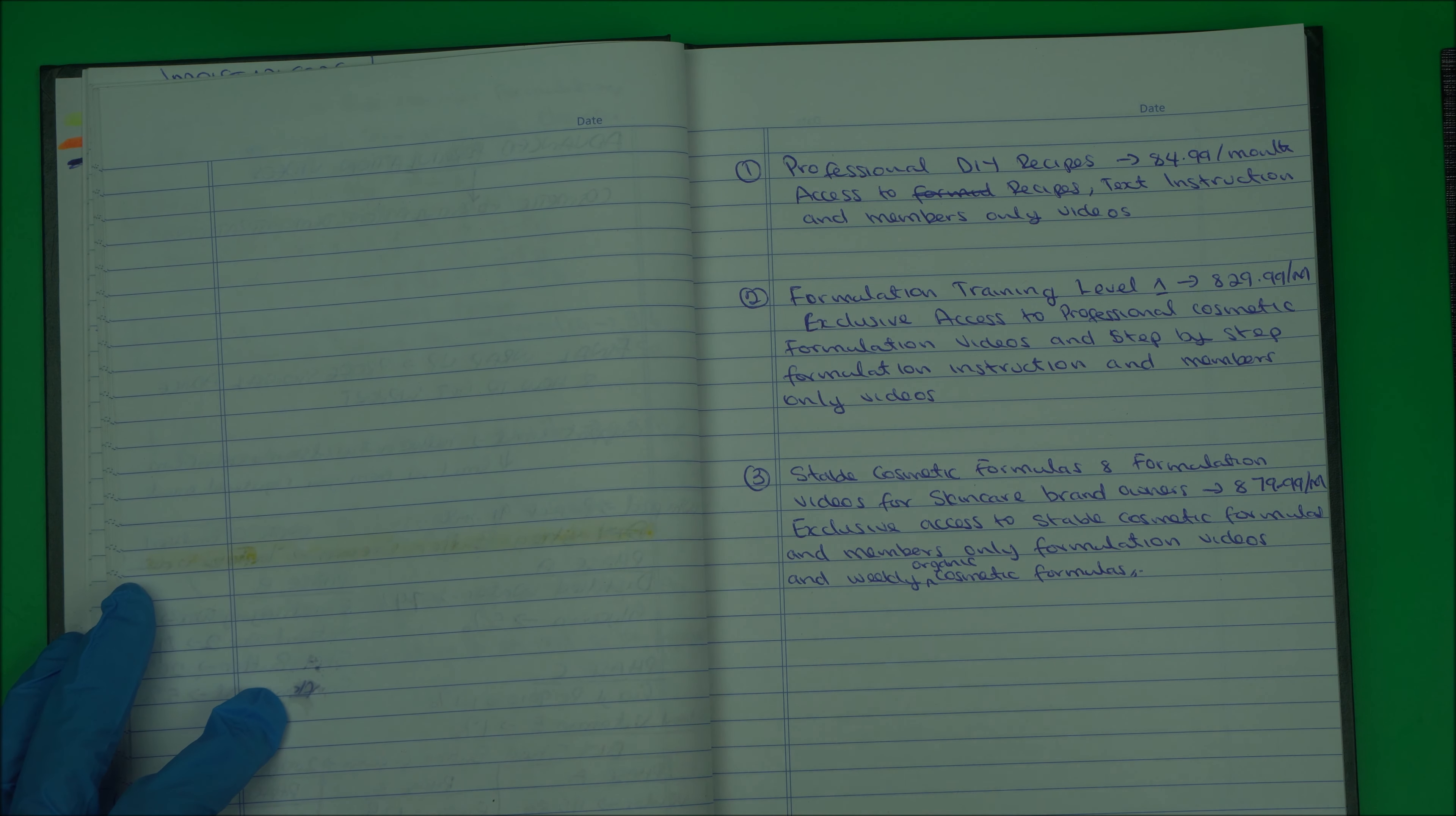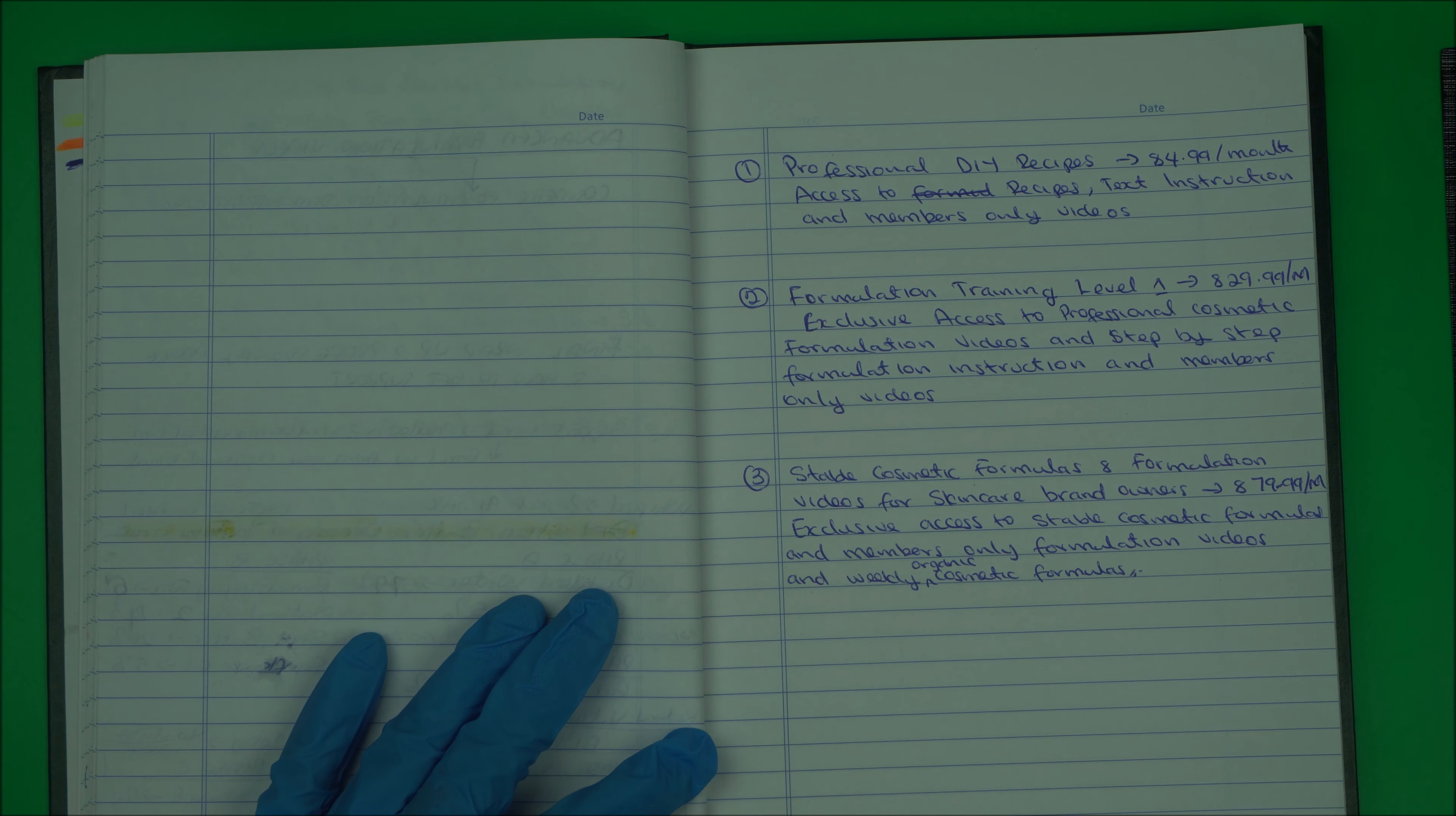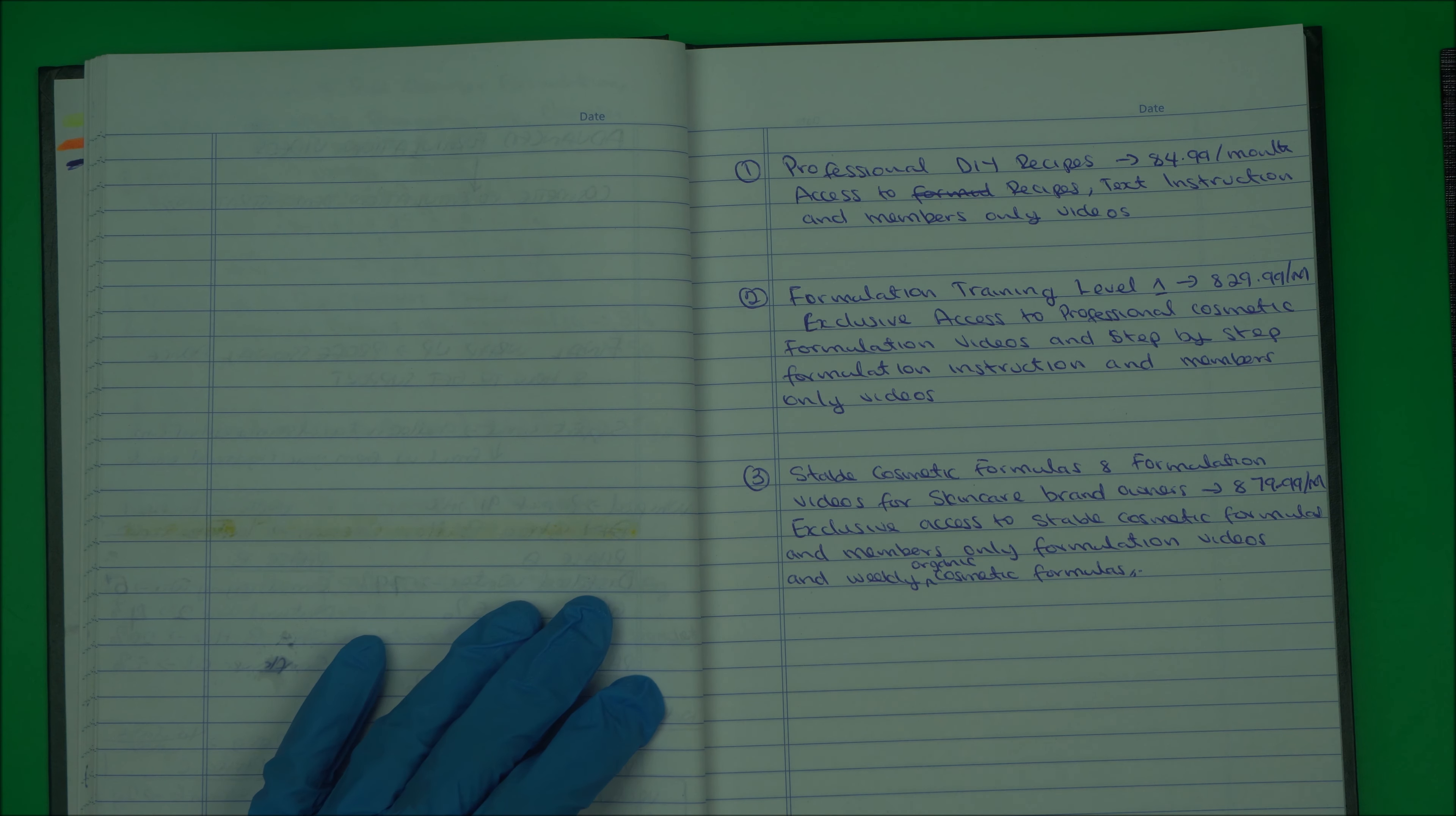My second membership level is Formulation Training Level 1. This is professional cosmetic formulation training videos. It will have step-by-step formulation instruction and members-only video. Every week I'm going to be releasing different videos. I can't tell you exactly how many, but at least every week you're going to have a minimum of one to two videos.